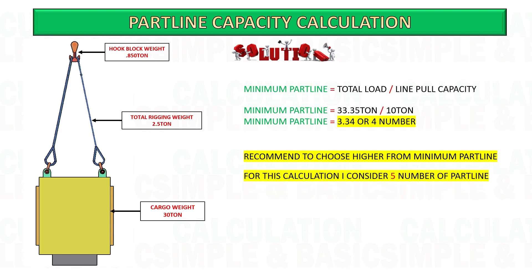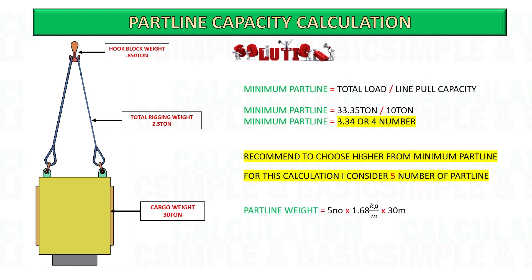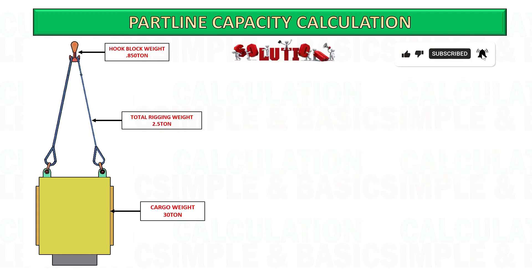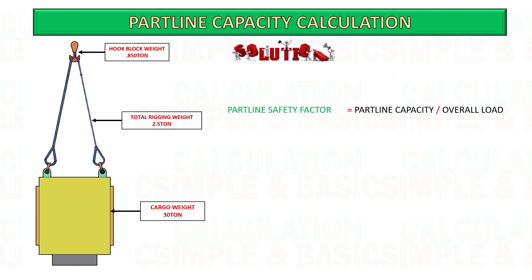Remember, we also need to add the weight of the crane wire. Since we already know the number of part lines we plan to use, multiply the number of part lines by the weight of the wire per meter.